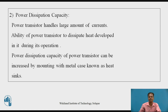Power dissipation capacity: in a power amplifier, power transistors are used that are designed to handle a large amount of current. It is the ability of a power transistor to dissipate heat developed in it during its operation. The power dissipation capacity of a power transistor used in a power amplifier can be increased by mounting it with a metal case — like an aluminum sheet metal case attached to the power transistor — known as a heat sink. It transfers heat developed in the power transistor to the surrounding atmosphere.